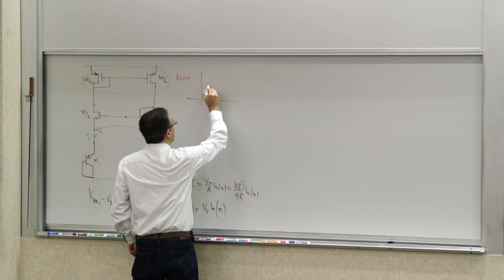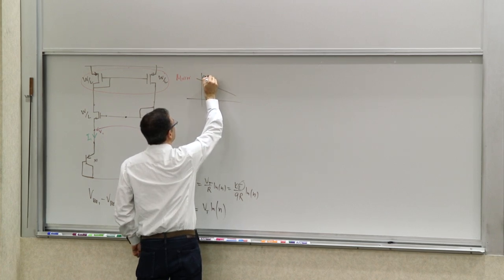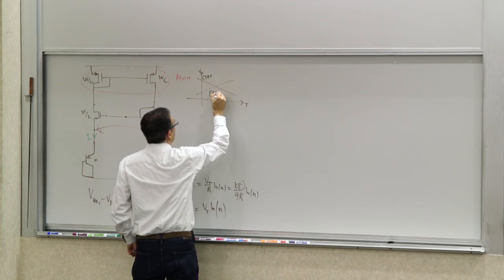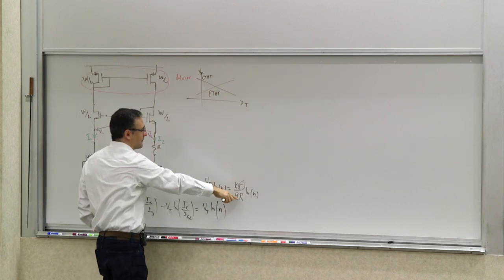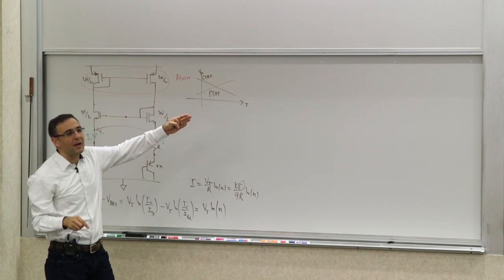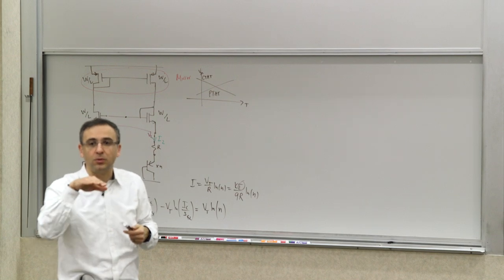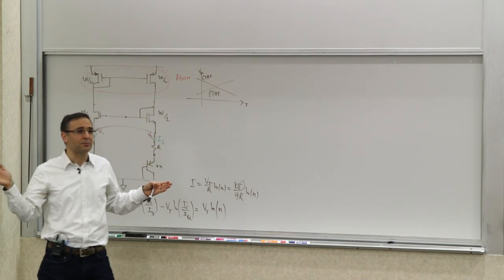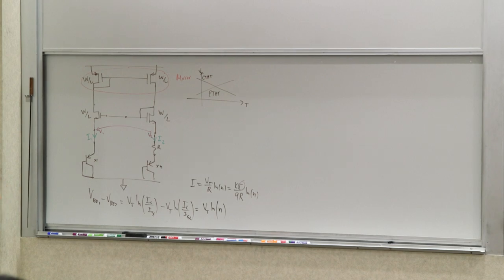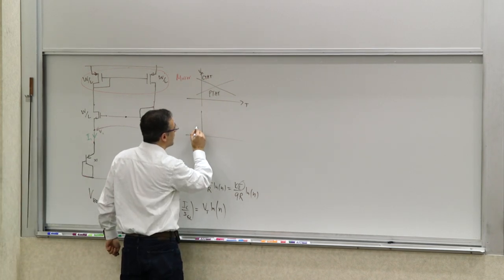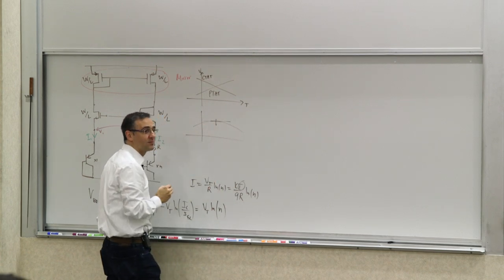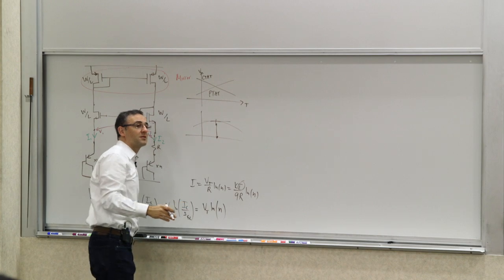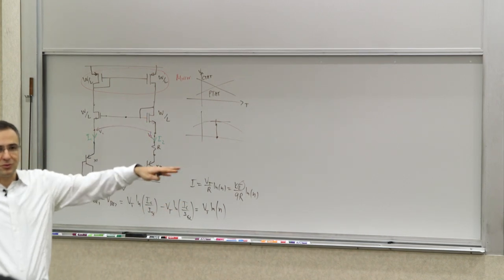Combining PTAT and CTAT: VBE drops with temperature (CTAT), while PTAT rises. If you give PTAT the right slope — by choosing the right coefficient — you can add them so that at least at one point their slopes cancel, producing a zero slope. This cancellation is not across the entire temperature range; it's really at one point. Around that point, the first derivative is zero, making the temperature dependence weak, and you can adjust where this point is.